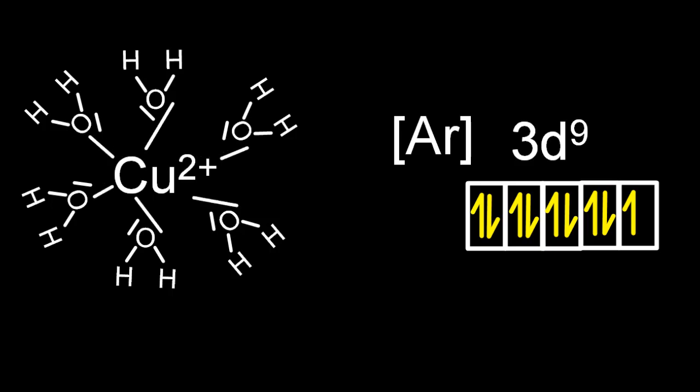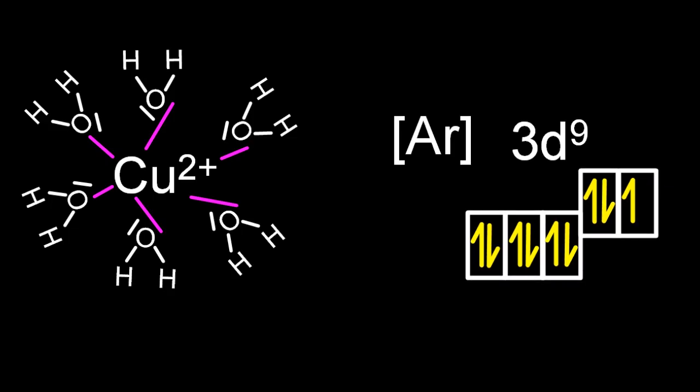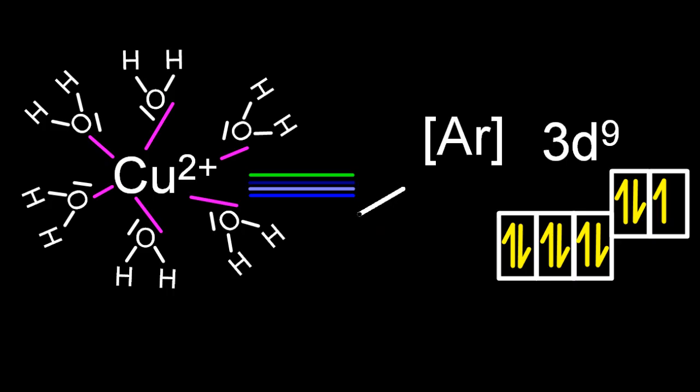Again, in purple, purplish-pink, is the dative covalent bonds. The d-orbital split is a 3-2 split. And now when I put light through, oh, some of the light's disappeared.